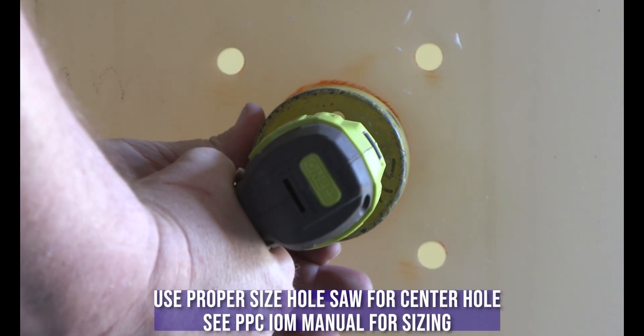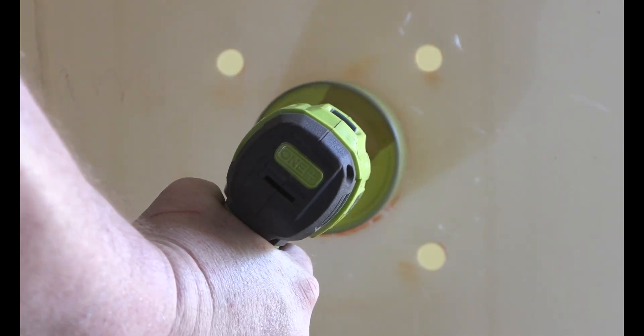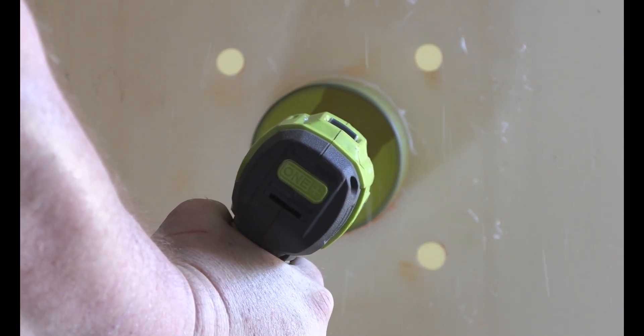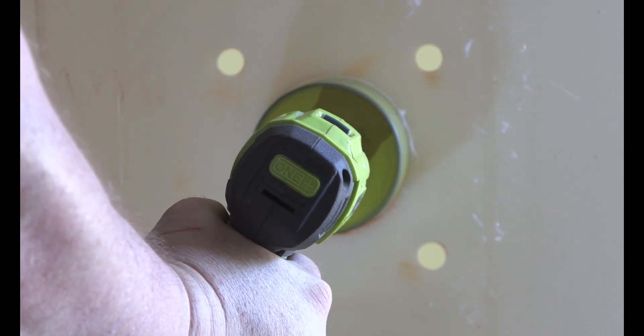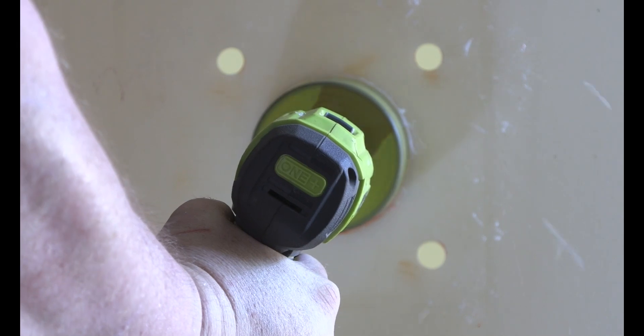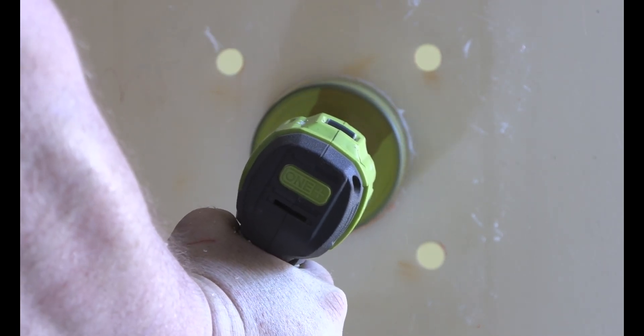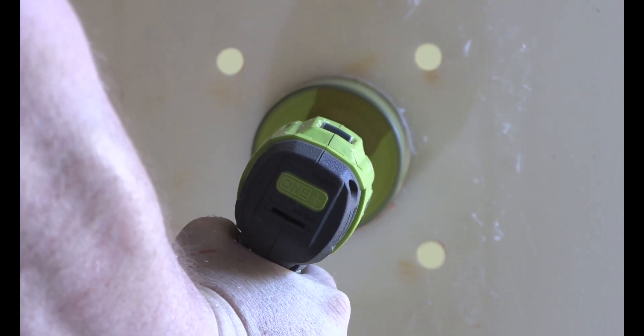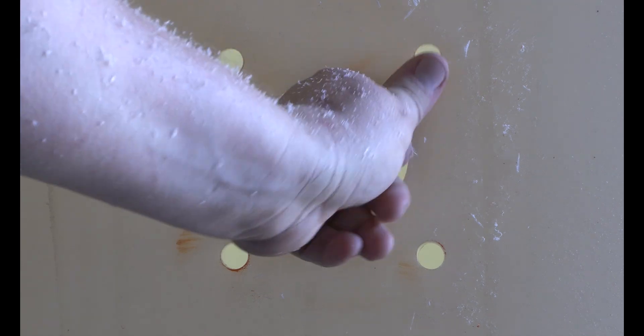Next step, take your hole saw. You have your pilot already piloted. Don't push or force. You want to let the bit cut for you because we don't want to leave burrs when we're cutting into the tank. Take your time, push straight in, don't wobble it. As you can see, center hole's cut. We'll have to clean it up just a hair.